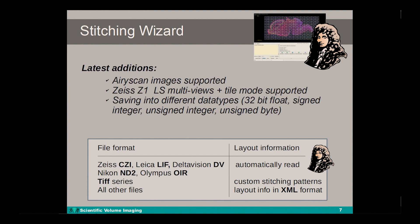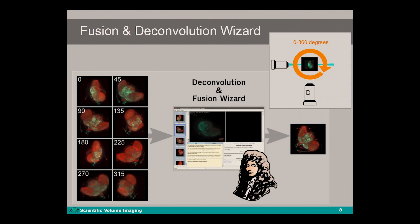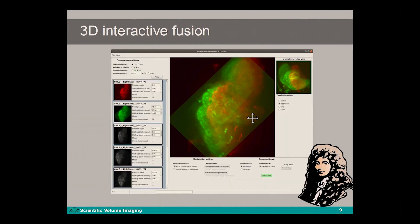The latest additions are that we now support stitching of tile images from the Zeiss Airyscan and multi-view images from the Zeiss Z1 lightsheet. Also, you can now save stitched images into different data types. The stitching and deconvolution wizard should not be confused with the current lightsheet fusion wizard, with which multiple views can be fused into a single image to address typical lightsheet imaging artifacts like light scattering and absorption. I'd like to emphasize that we've recently developed a new 3D interactive fusion tool, with which in the very near future you will be able to stitch and fuse lightsheet datasets.